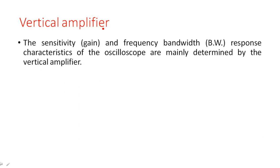In the vertical deflection system, we have a vertical amplifier. What is the purpose of the vertical amplifier and what does it internally consist of — is it a single amplifier or are there other devices? The sensitivity — which is nothing but gain — and the frequency bandwidth response characteristics of the oscilloscope are mainly determined by this vertical amplifier. If you take the frequency response of this vertical amplifier, it will appear as a wideband amplifier response.